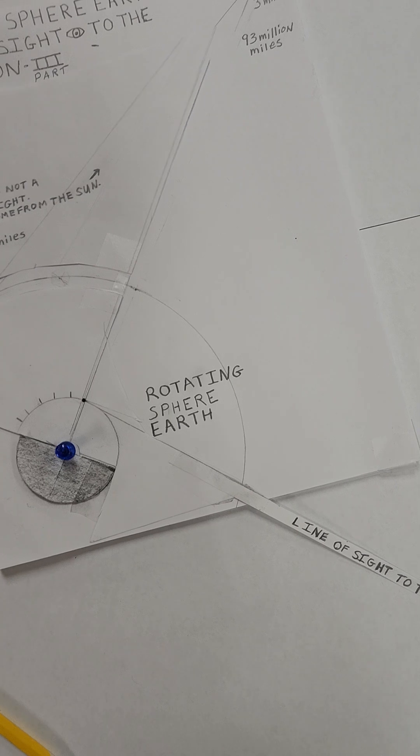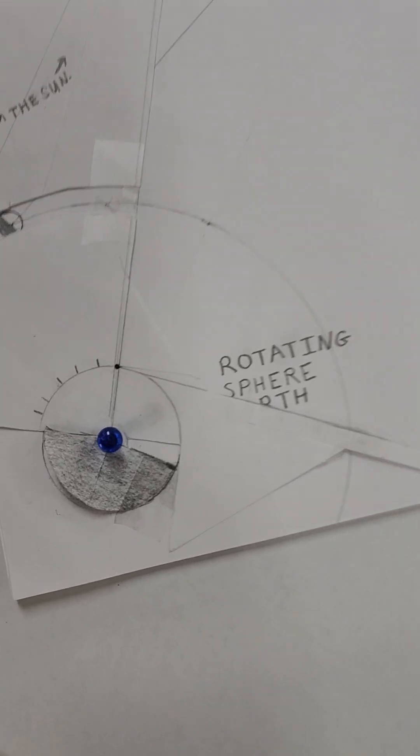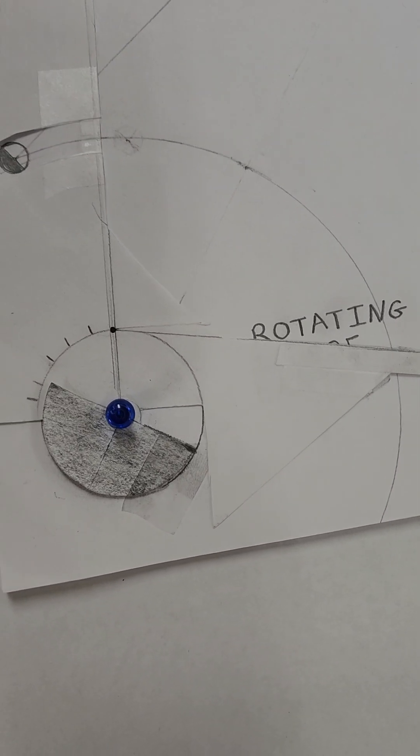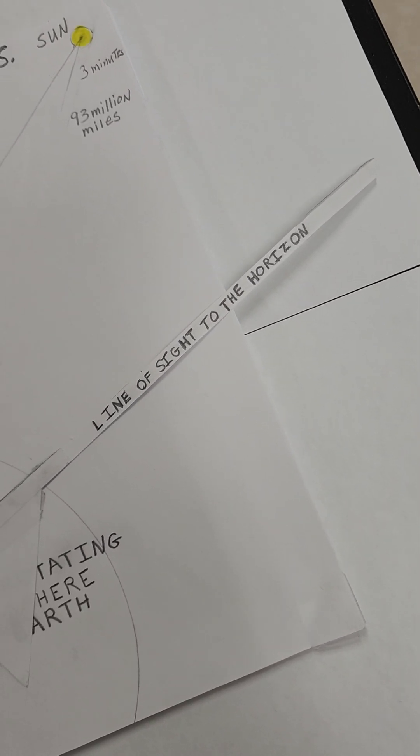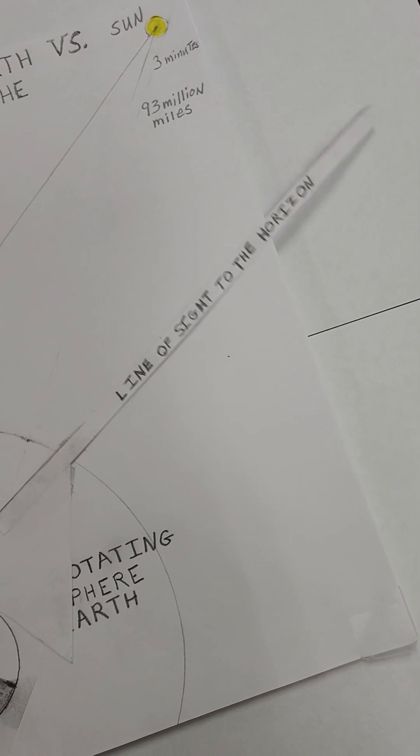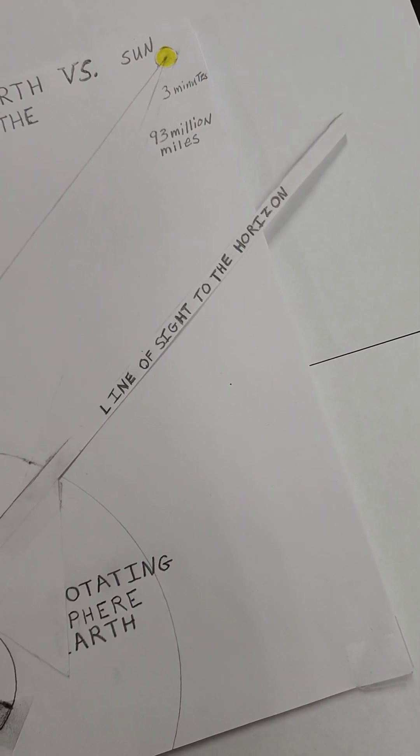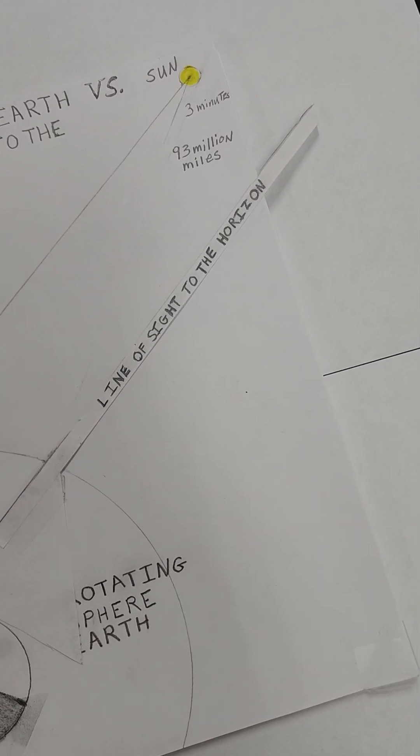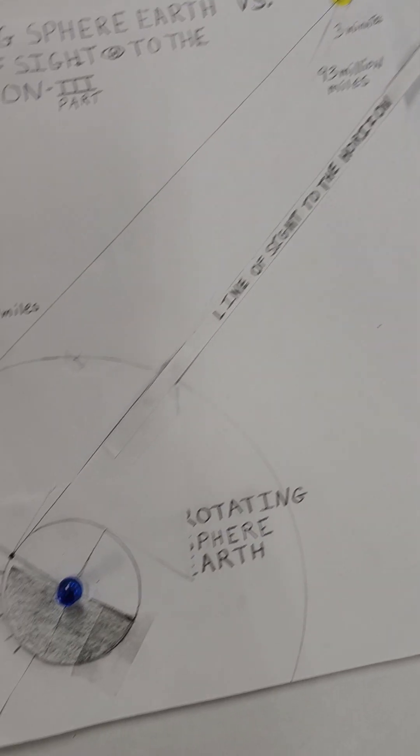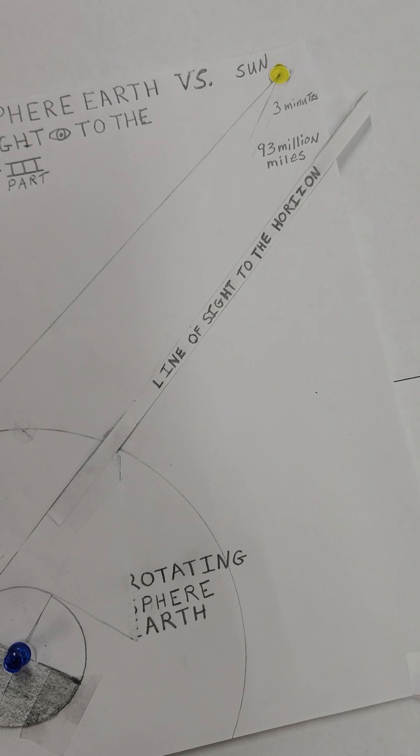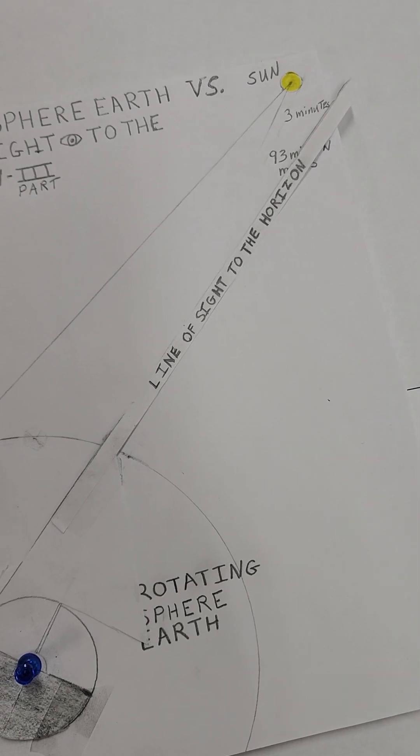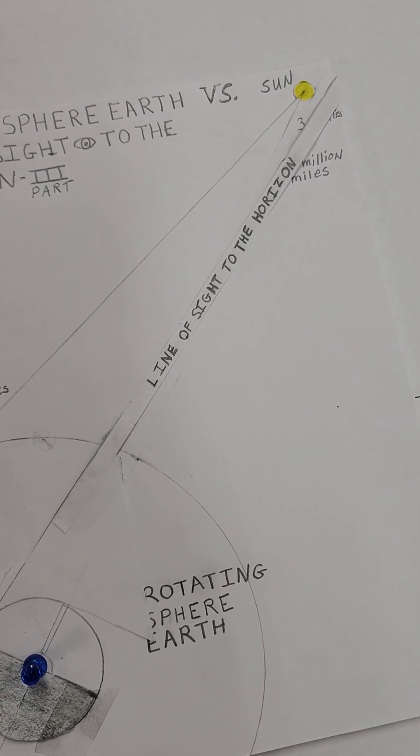The earth is rotating. See, it's rotating. And the line of sight comes up and gets closer and closer to the sun. Do you see that? The line of sight from the earth, from you, you're rotating. What governs the line of sight is the rotation of the earth.